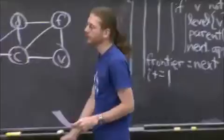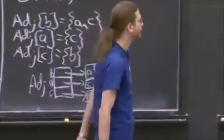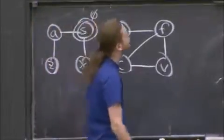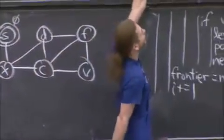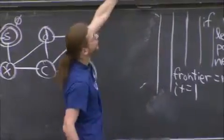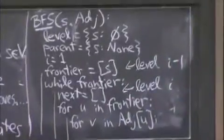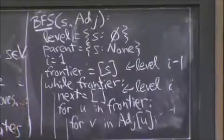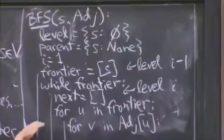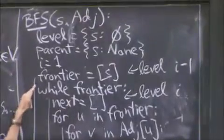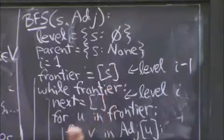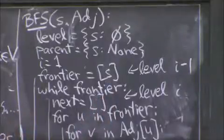So to get started, what we know is s. s is what you can reach in 0 moves. So we set the level of s to be 0. That's the first line of the code. There's this other thing called the parent. We'll worry about that later. It's optional. It just gives us some other fun structure. We set i to be 1 because we just finished level 0. Frontier of what you can reach in level 0 is just s itself. So we're going to put that on the list. That is level 0. i equals 1. So 1 minus 1 is 0. All good.